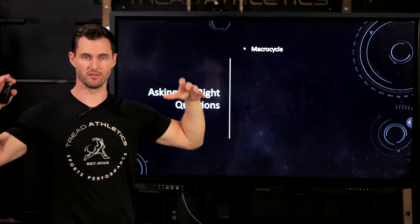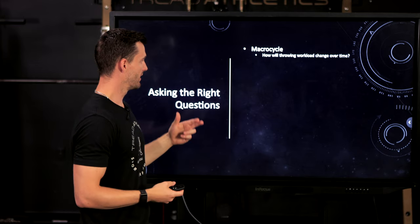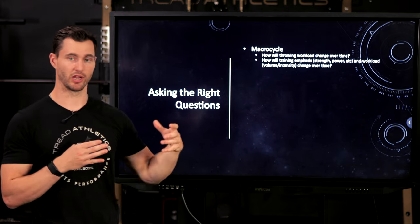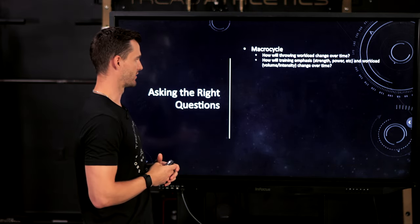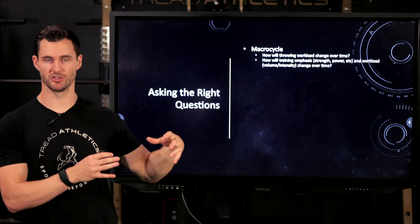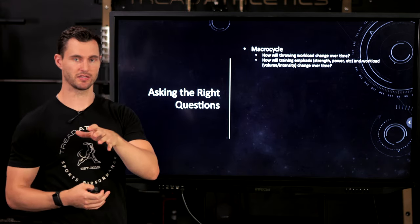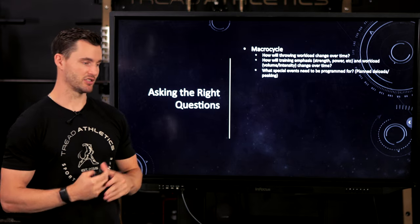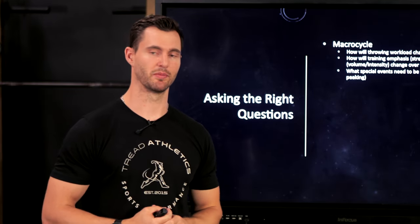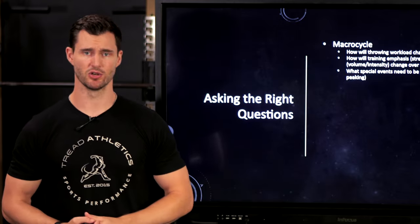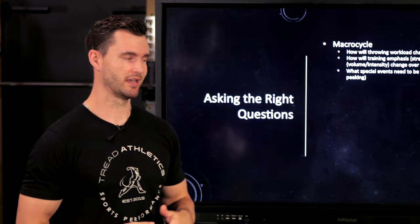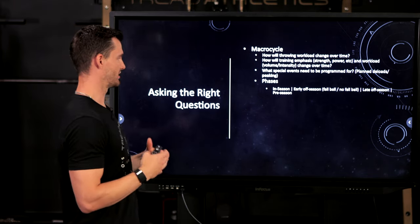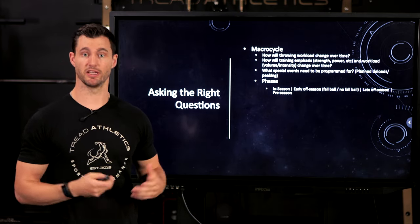It's like layers of an onion — being able to see the big picture and how all the pieces interrelate. At the macrocycle level, you've got to answer: how will their throwing workload change over time? How will their training emphasis — what they're doing in the weight room — change over time? What special events need to be programmed for, like scout days or showcases? You need to account for in-season, early off-season, late off-season, and pre-season phases, which will obviously change based on the athlete's level.